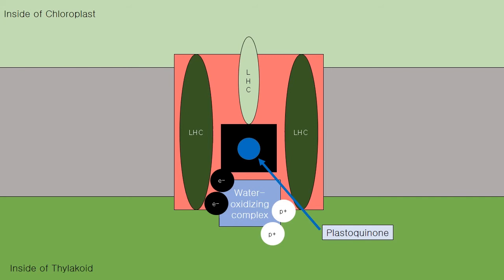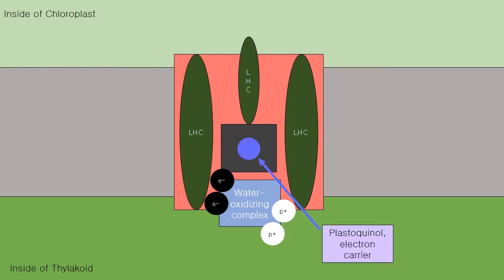Two protons are taken from outside of the thylakoid to use in photosystem II's electron transfer. Using the light energy it receives from the light harvesting complexes, photosystem II adds two electrons and two protons to plastoquinone, which it turns into plastoquinol.